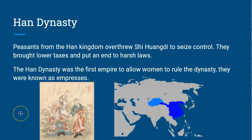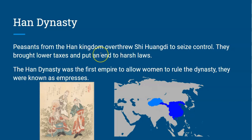Our final vocab word is the Han dynasty. Peasants from the Han kingdom overthrew Qin Shi Huangdi to seize control. They brought lower taxes and put an end to his harsh laws. The Han dynasty was also the first empire to allow women to rule — they were known as empresses. That's our final vocab word — hopefully you made it this far and answered all your questions!